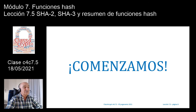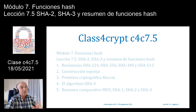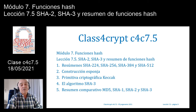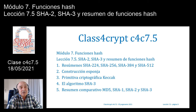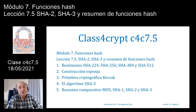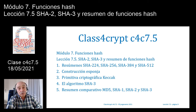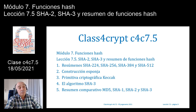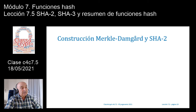Hola, ¿qué tal? Encantado de saludarte. Vamos a comenzar la clase de hoy, la última correspondiente a este módulo 7 de funciones hash, con la lección 7.5 de título SHA2, SHA3 y resumen de funciones hash. Nuestra agenda va a ser: 1. Resúmenes SHA224, SHA256, SHA384 y SHA512. 2. Construcción esponja. 3. Primitiva criptográfica Keccak. 4. El algoritmo SHA3. Y por último, 5. Resumen comparativo con MD5, SHA1, SHA2 y SHA3.